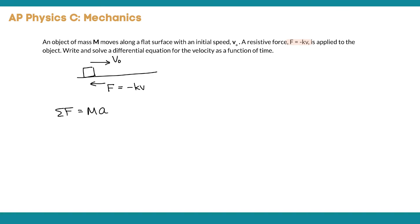That net horizontal force would be equal to the mass of this object times its acceleration. On the left hand side of our equation we can replace net force with the expression negative kv, and on the right hand side we have mass times acceleration, which is the time derivative of velocity. So that's where we're getting a differential equation—the presence of this dv/dt term.